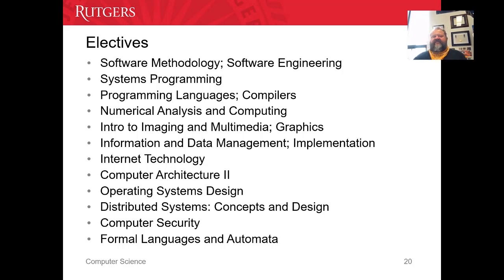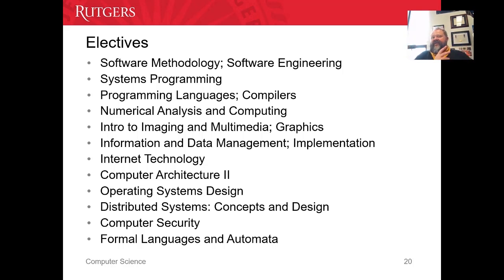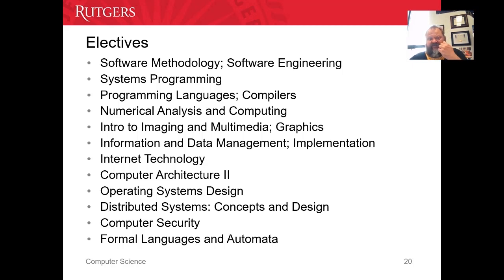Electives come in two different levels. There are 300-level courses you'd take in your junior year — these are broad areas like information and data management (databases, 336), internet technology (352), or principles of programming languages. Then as you get to your senior year, you start taking 400-level electives where you begin to specialize: artificial intelligence, security, operating systems, compilers, finite automata. That's where you'll understand computer science theory at a deeper level.